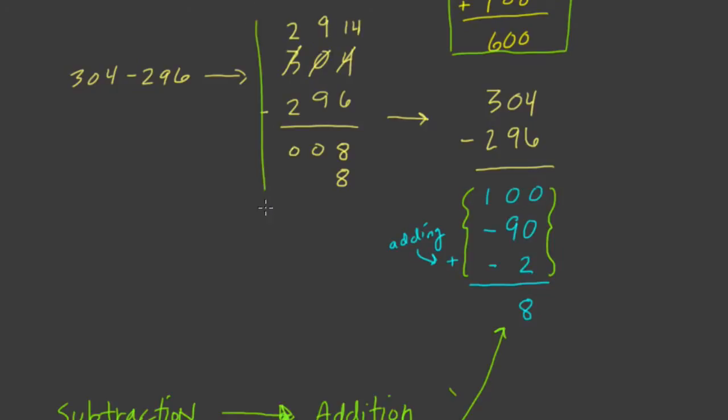We talked about borrowing. Then we talked about subtracting the largest place value first and dealing with negative numbers to put your answer back together again.